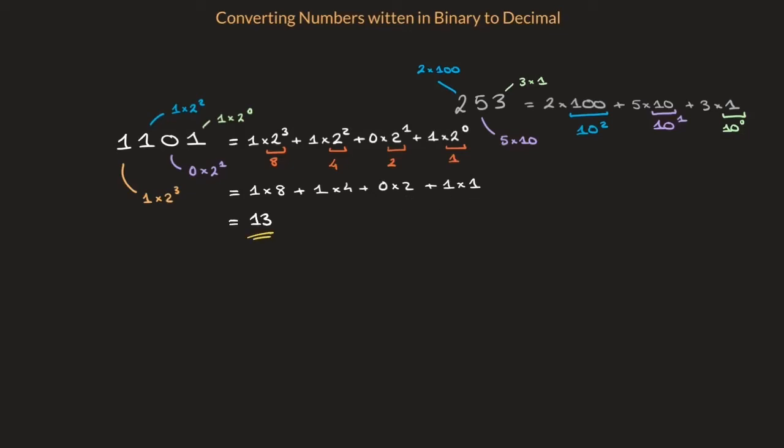And we're done. We've just converted the binary 1, 1, 0, 1 into decimal 13.